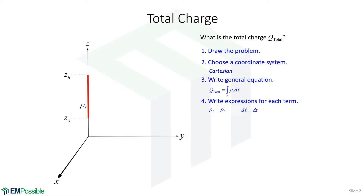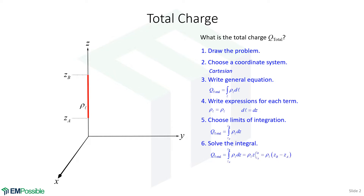The differential length — we're integrating in the Z direction, so DL is simply DZ. We choose our limits of integration: we're integrating from Z_A up to Z_B. The ρ_L is a constant and comes outside the integral. We just have a 1 inside, and the antiderivative of 1 with respect to Z is Z. So we evaluate this definite integral from Z_A to Z_B, giving us Z_B minus Z_A.